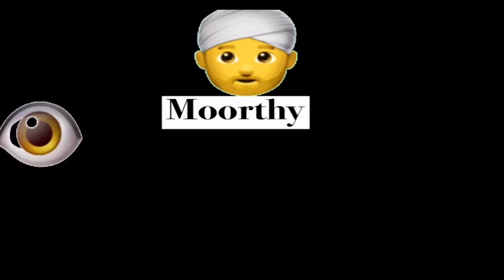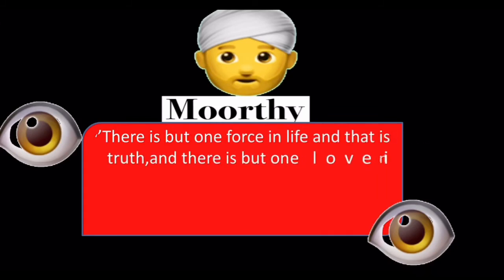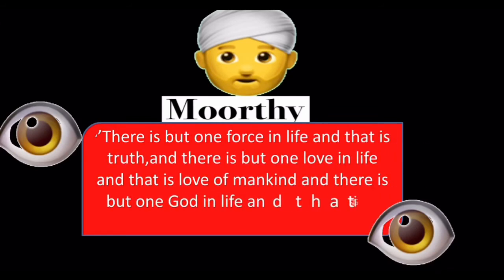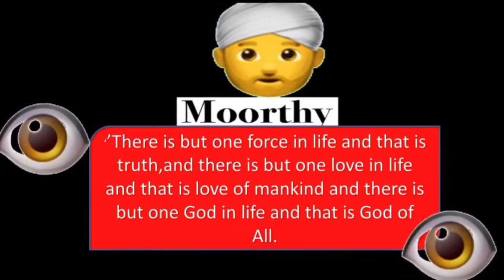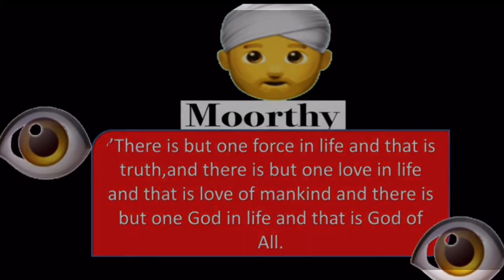In the next scene, Murthy has a vision in which he sees Mahatma Gandhiji and hears the words: 'There is but one force in life and that is truth. And there is but one love in life and that is the love of mankind. And there is but one God in life and that is the God of all.' After this, Murthy becomes deeply idealistic and his fight against conservative forces begins. Murthy declares himself Gandhi's slave and thereby influences other people to do so.